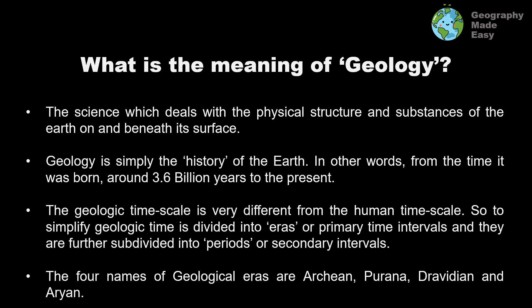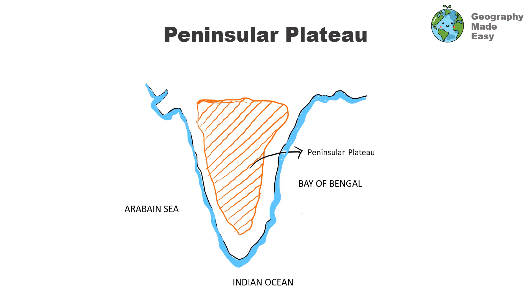We will be looking at the three most important physiographic landforms of India with respect to geology, trying to understand how geology has helped in their evolution. The first structure is the peninsular plateau, which occurs in the southern or peninsular part of India. It stretches in a tabular, tapering fashion from north to south.